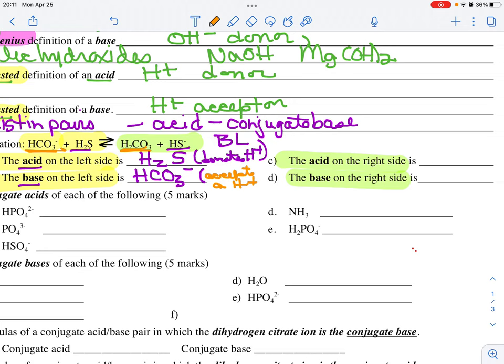I'm going to slide over a bit. Now the acid on the right side, we're going to look at the right side now. So we're going to look at the two species here. Now we're going to look at these two species. The acid of those two, remember, is the donor. And that will be H2CO3, which is carbonic acid, which leaves as my base HS minus.